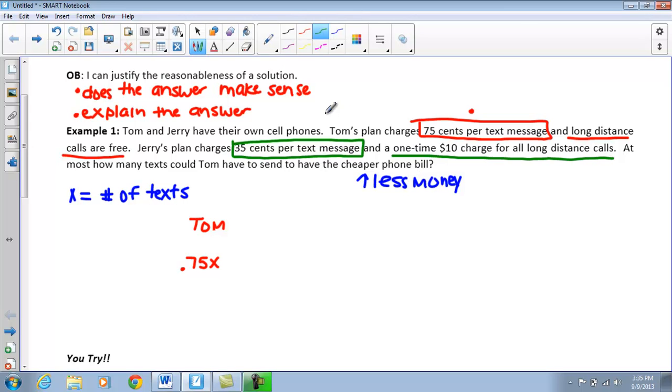Then if I take a look at the information they give us about Jerry, it says that Jerry pays $0.35 per text message and also has that $10 fee for long distance calls. Now when we're looking for inequality, we want Jerry to be the one to spend more money. We want Tom's bill to be less, so we're going to use that less than or equal to.